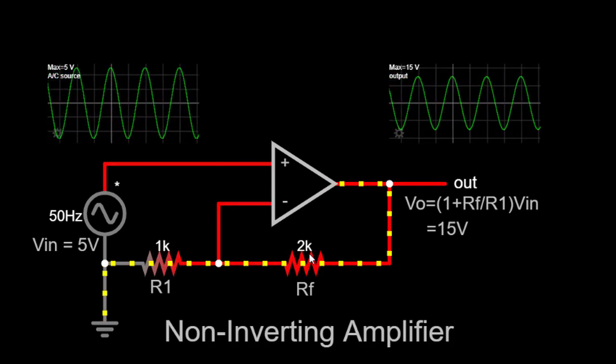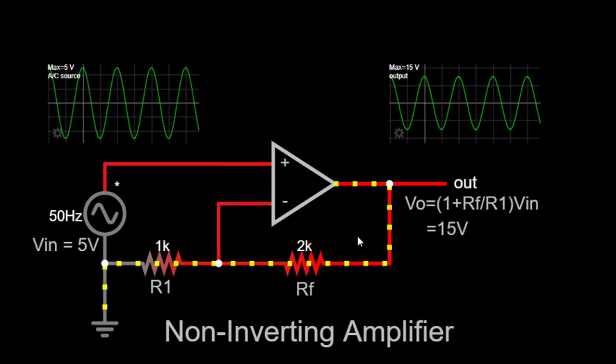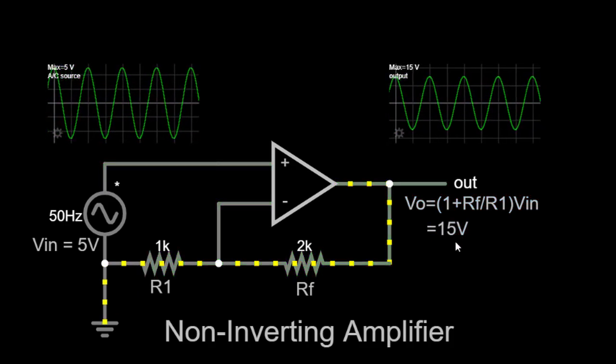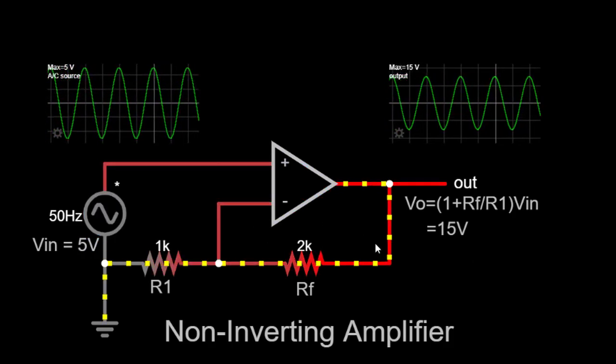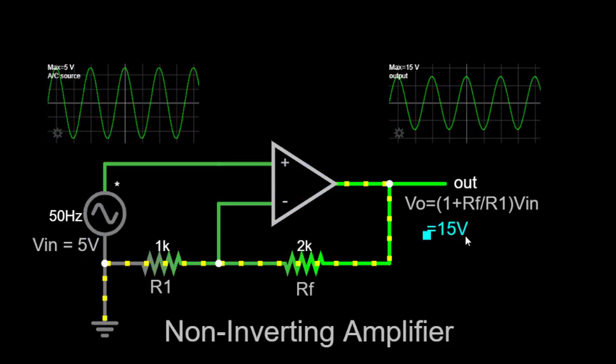As you can see on the simulator screen, the output voltage is now approximately 15V. The non-inverting amplifier has amplified the 5V input signal to 15V without changing its polarity.